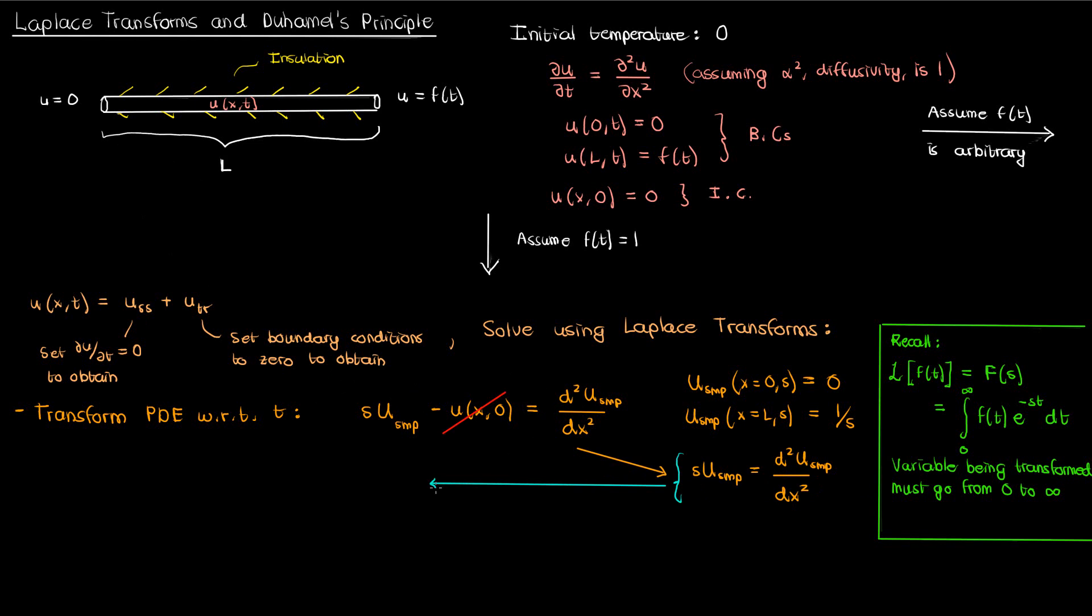If I solve the second order ODE on the Laplace transform capital U sub SMP, I'll get the sum of a positive and negative exponential with a coefficient of square root of S inside the power. The a and b are constants that can be found using the boundary conditions. So let's apply those boundary conditions to find a and b.